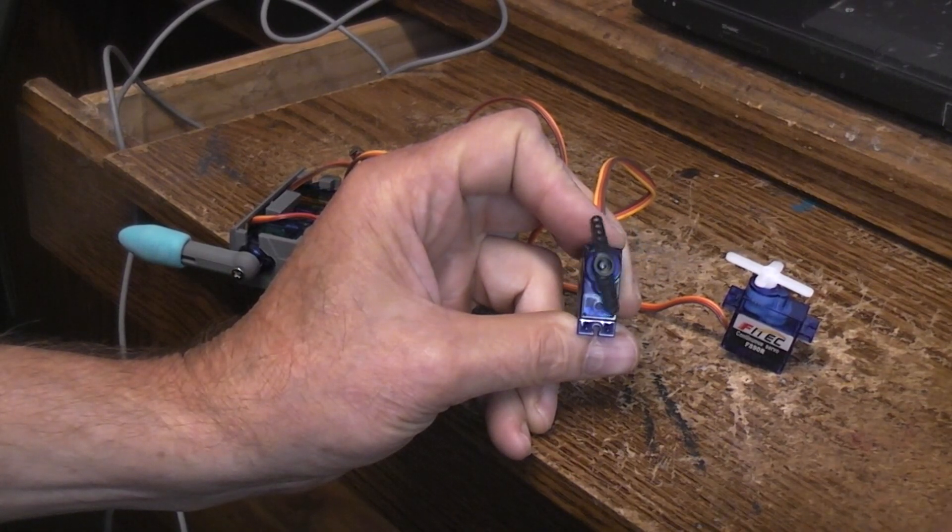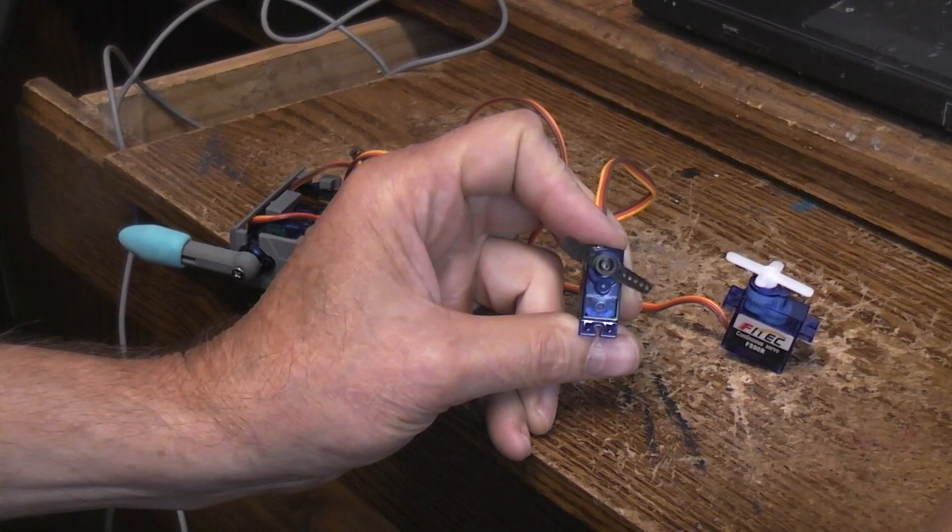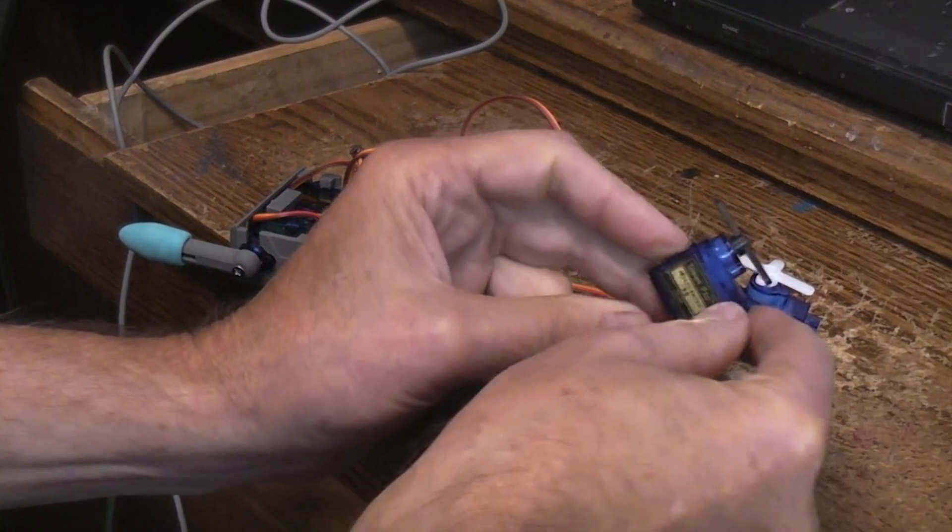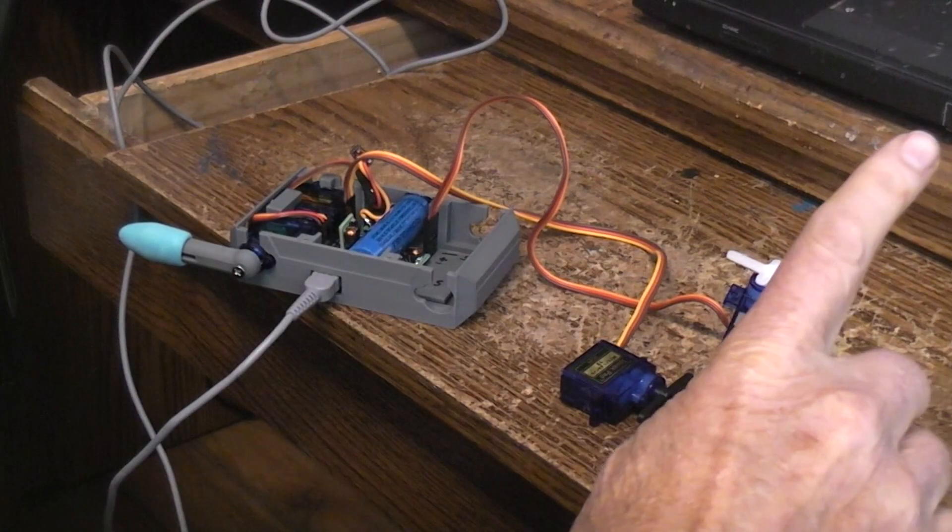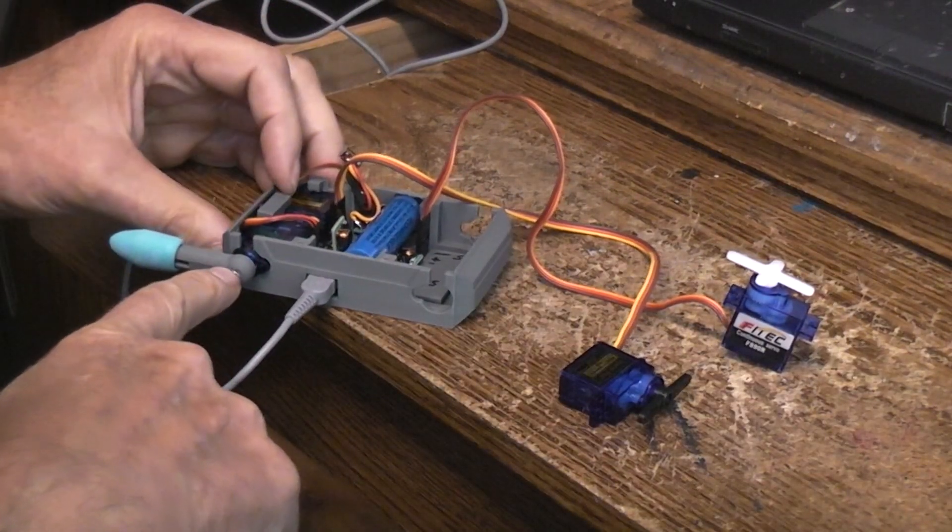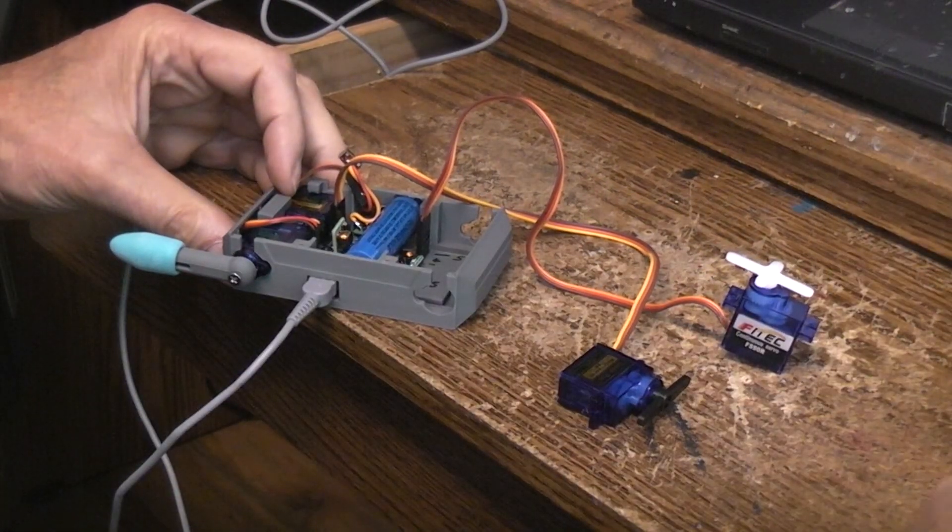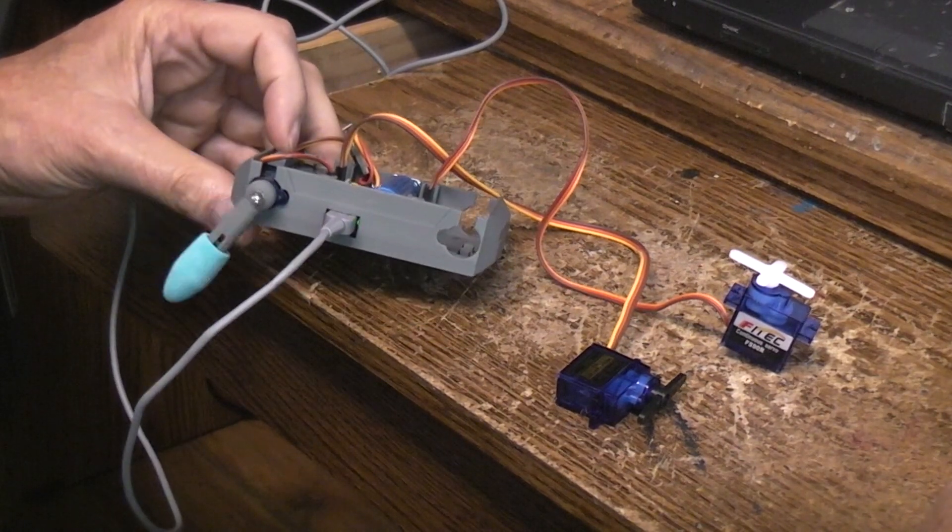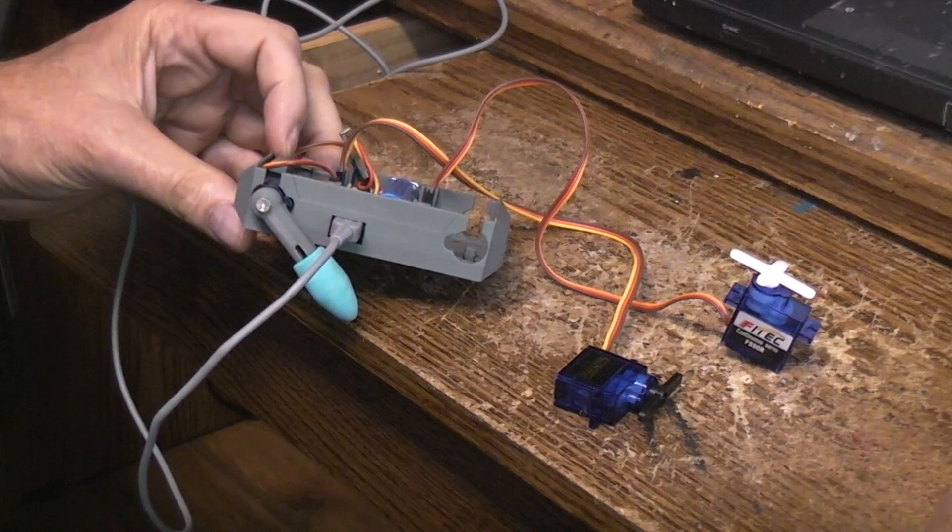So that's your 180 degree turn that you can get out of a standard 9G servo. Very inexpensive one. This one over here which I have the leg connected to, I think it's this control, yep that's the new digital servo. See how far it can go there?